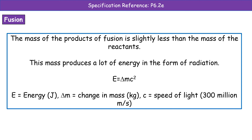The last thing we're going to look at today is E = mc². The mass of the products of fusion is slightly less than the mass of the reactants. Using E = ΔMc², that tiny change in mass actually produces a huge amount of energy. E is energy in joules, delta means change in mass in kilograms, and we multiply that tiny change in mass by the speed of light squared — 300 million metres per second — squared before multiplying by the change in mass. So even a small change in mass leads to a huge amount of energy.